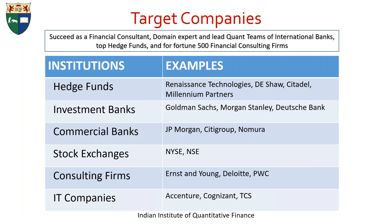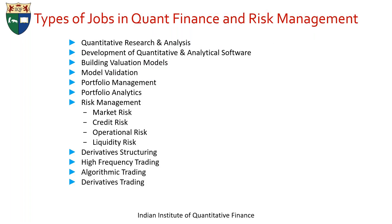Target companies include hedge funds like Renaissance Technologies, Two Sigma, or Citadel; investment banks like Goldman Sachs, Morgan Stanley, and Deutsche Bank; commercial banks like JP Morgan, Citibank, and Nomura; in the Indian context, ICICI Bank or HDFC Bank; stock exchanges like NYSE or NSE; consulting firms like EY, Deloitte, and PwC; and IT companies like Accenture, Cognizant, and TCS.